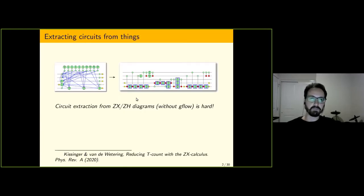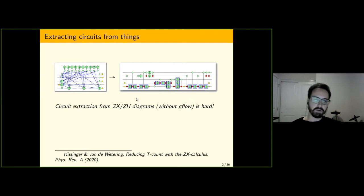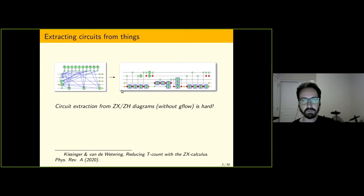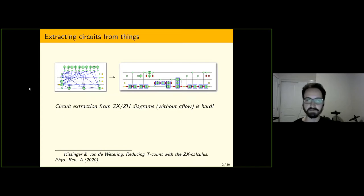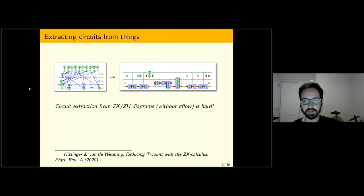The problem that we were tackling in this work was this question of extracting circuits from representations of quantum computations that aren't necessarily quite circuit-like. We already saw a talk about this earlier on in the week. John gave a talk on this question of circuit extraction from ZX diagrams, and the reason we typically want to do this is because we might be able to optimize or simplify some of these descriptions of quantum computations in some other representation more than we could in a circuit representation.